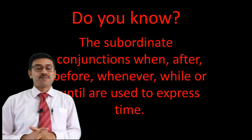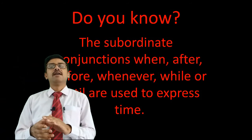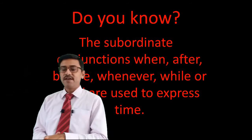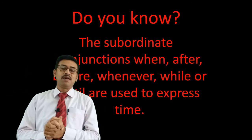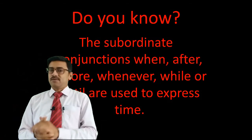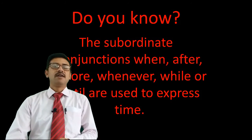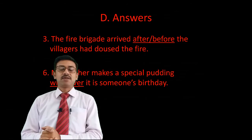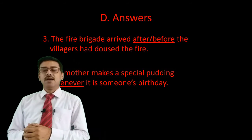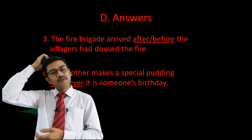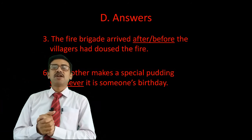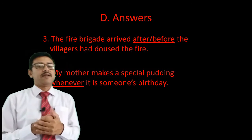The subordinating conjunctions when, after, before, whenever, while, and until are used to express time. Keep this in mind while doing exercise D. Sentence number three answer: 'The fire brigade arrived after' — or you could write 'before' — 'the villagers had doused the fire.' You can choose either of the two words. Sentence number six answer: 'My mother makes special pudding whenever it is someone's birthday.'